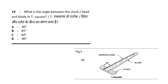Next question: What is the angle between the stock or head and blade in a T-square? T-square is the horizontal line. We use the lines of T-square — mainly T-wood. The T-square has two parts: the blade and the stock.